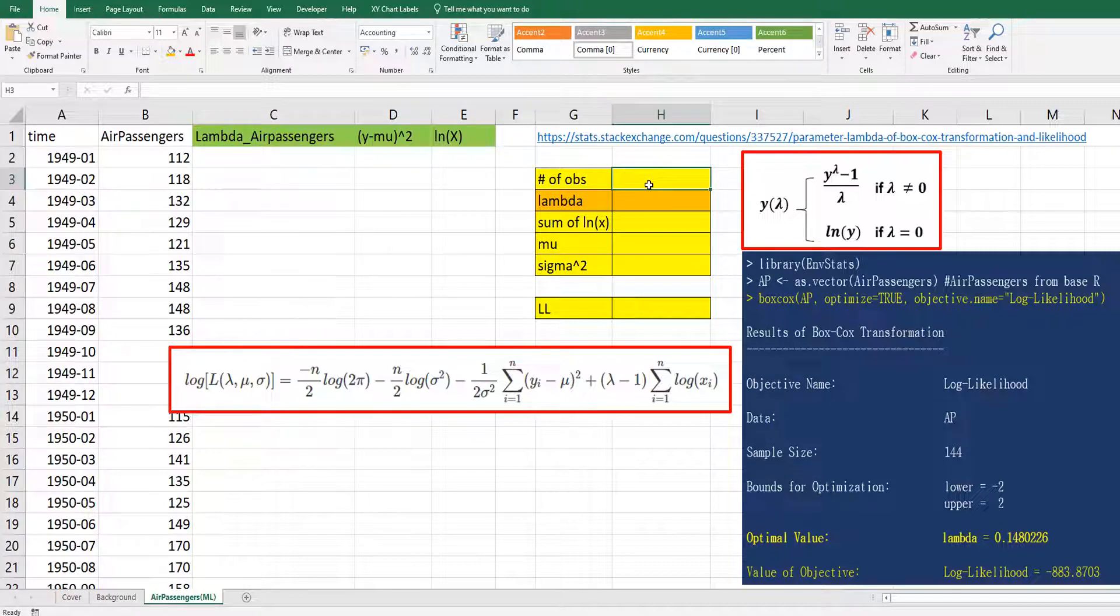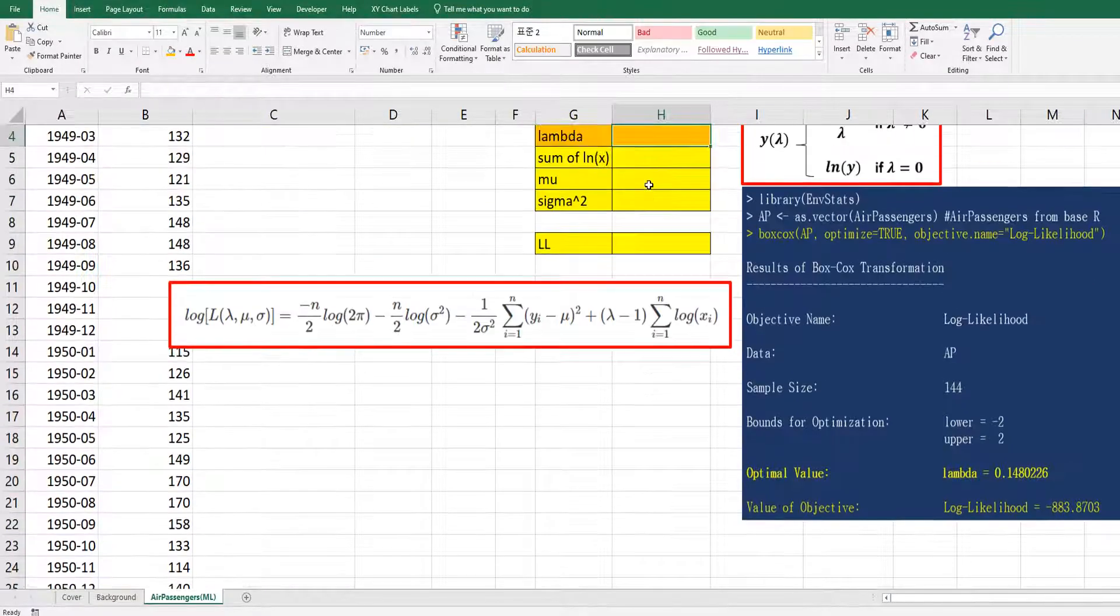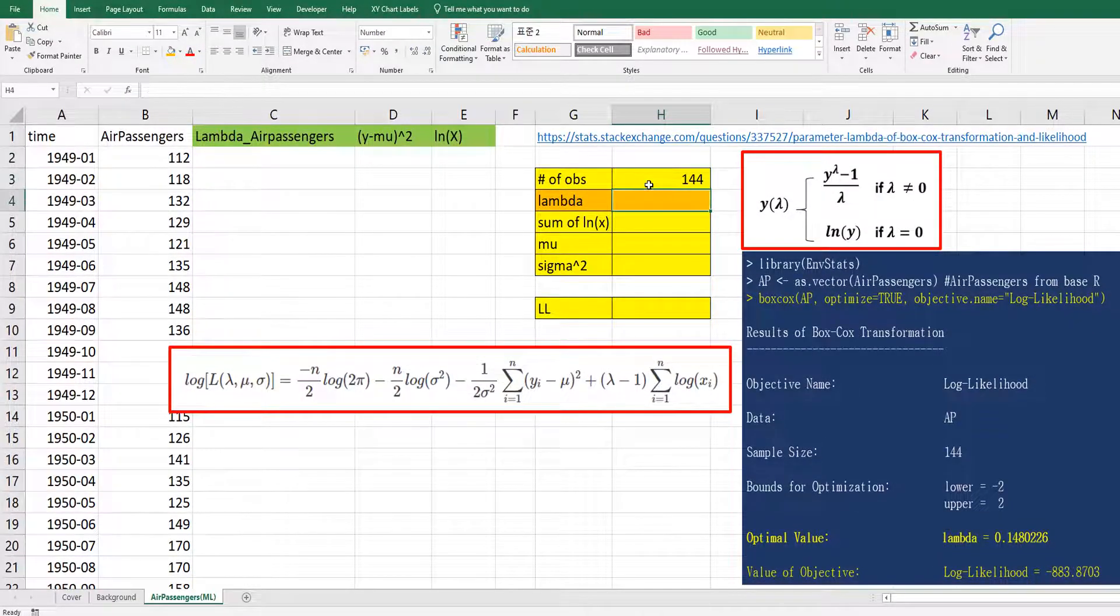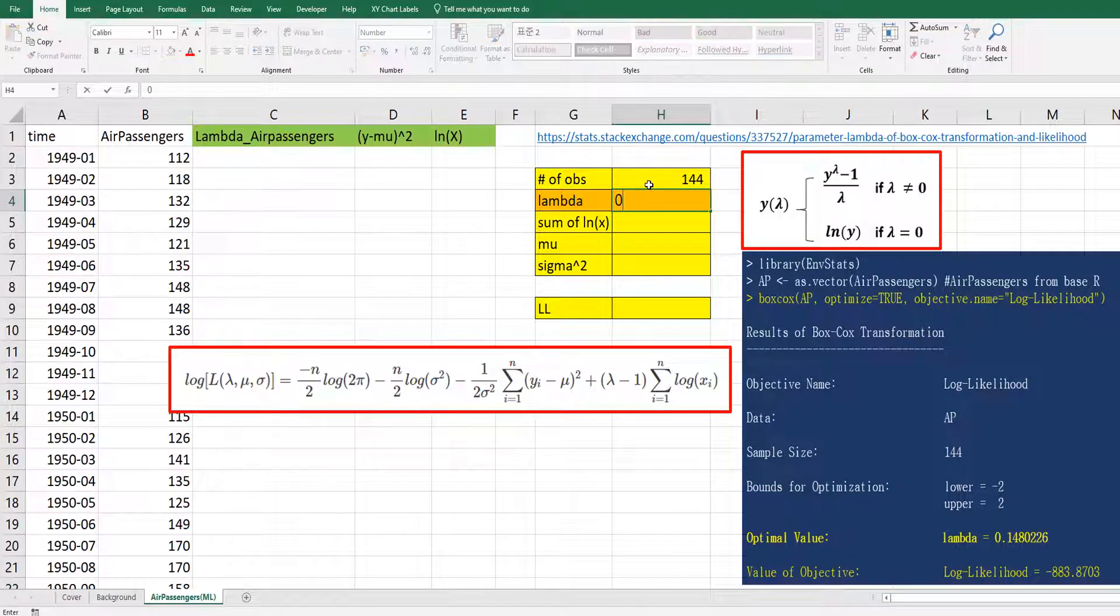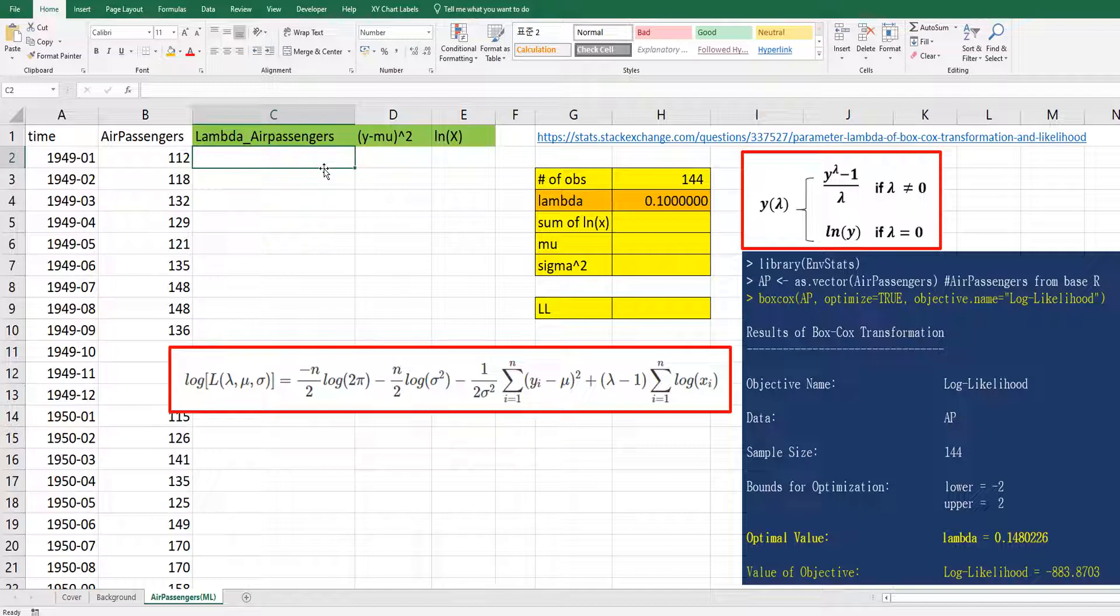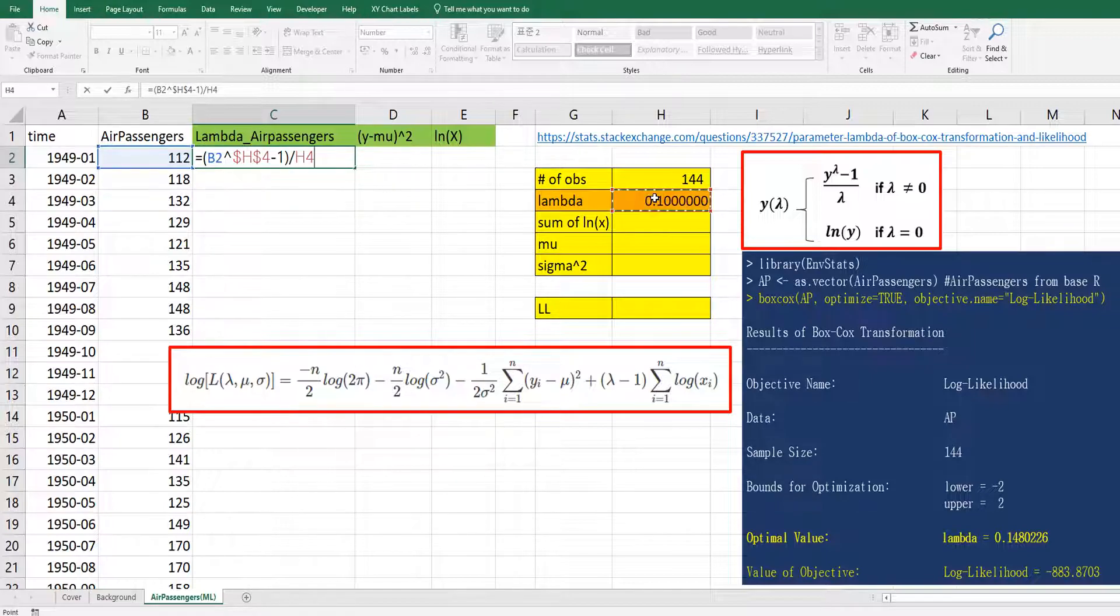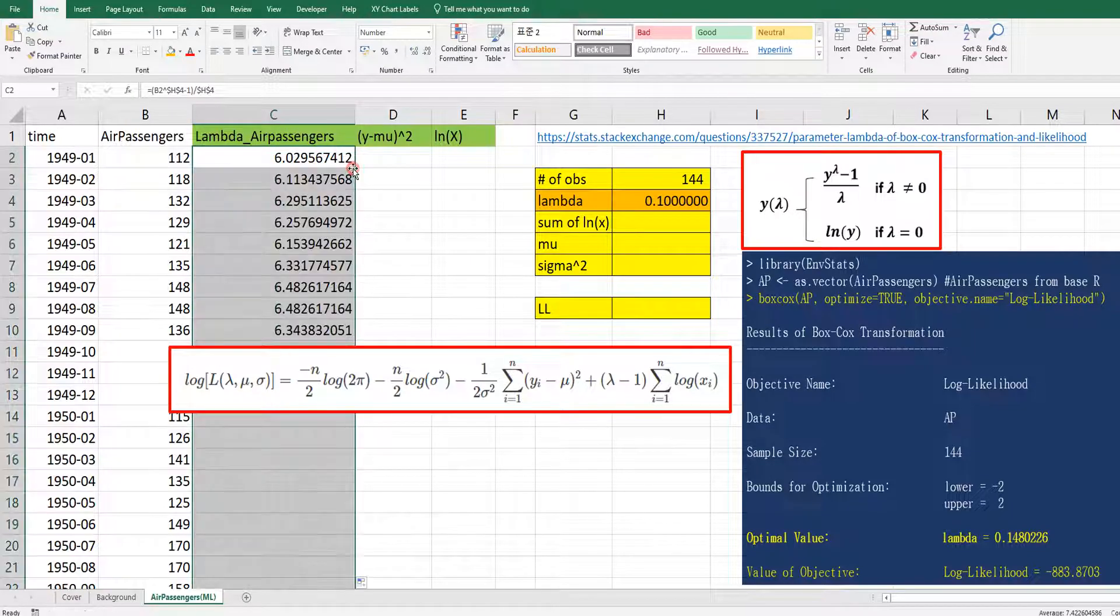So let's get a number of observations by using count function. There are 144 observations. And let's add lambda as 0.1 as an initial value. Then we can use this lambda, air passenger data Y, and lambda power minus 1 over lambda.